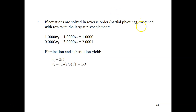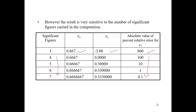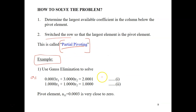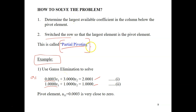Now let's apply partial pivoting and compare. We switch the row with the largest pivot element. In the original equation, the pivot element in the first row is 0.0003, while in the second row it is 1.0001. Since the first row's pivot is smaller, we switch the rows — the first row goes down and the second row comes up.